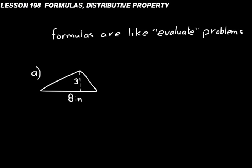Let's go ahead and do some practice problems. Find the area of the triangle in problem A. The first thing you need to do is find the formula for the area of a triangle. That is: area equals base times height divided by 2. That's the formula for the area of a triangle.